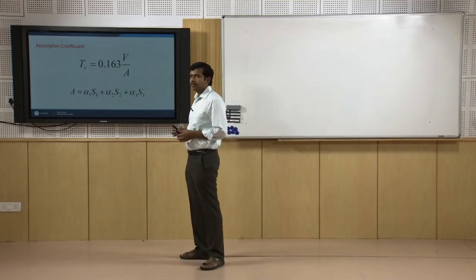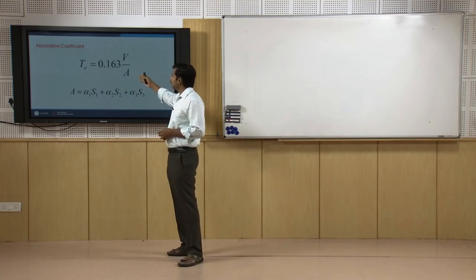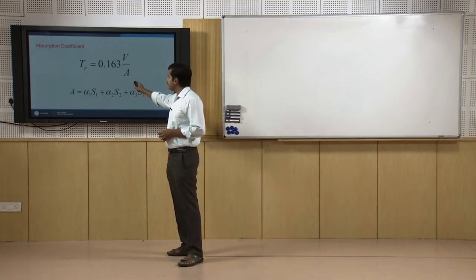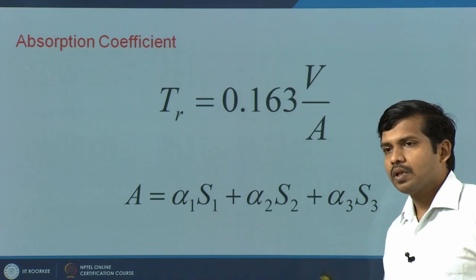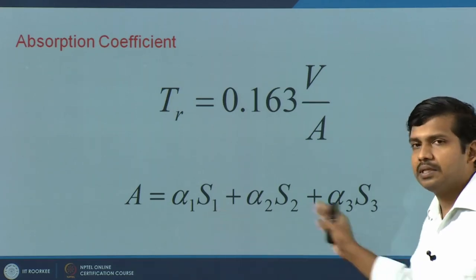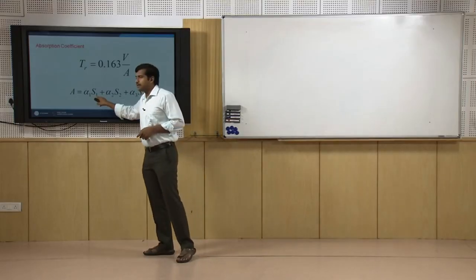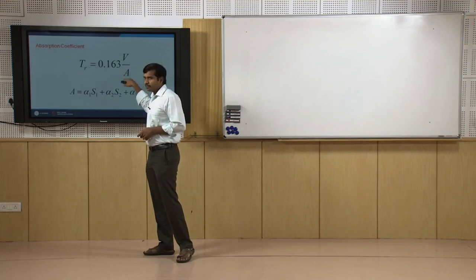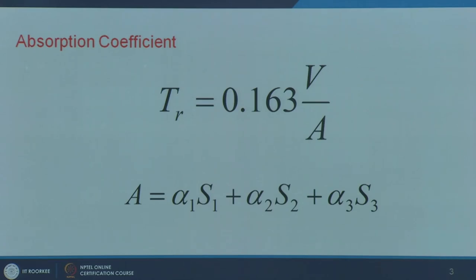A quick recap of what we saw last time: this was the reverberation time equation, Sabine's formula, where reverberation time is equal to 0.163 times volume divided by the absorption. A is alpha — the absorption coefficient of a specific material — times the surface area of that particular material's application. If you have n number of materials spread over specific surface areas, then you have a sigma of the specific absorption coefficient times the surface area.